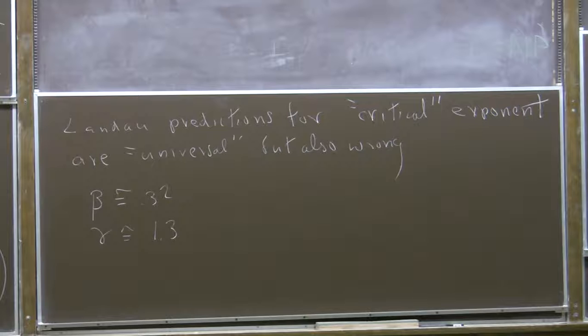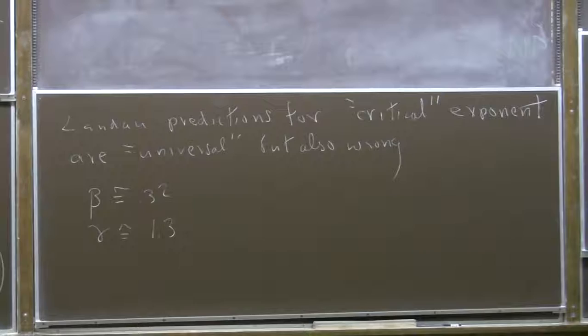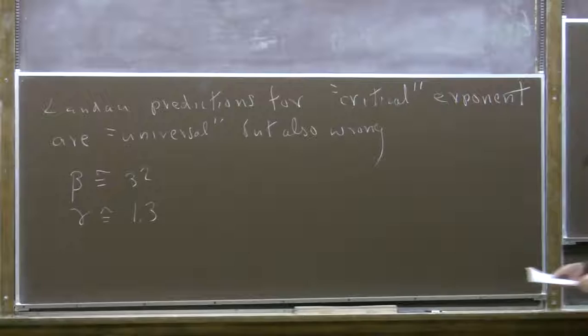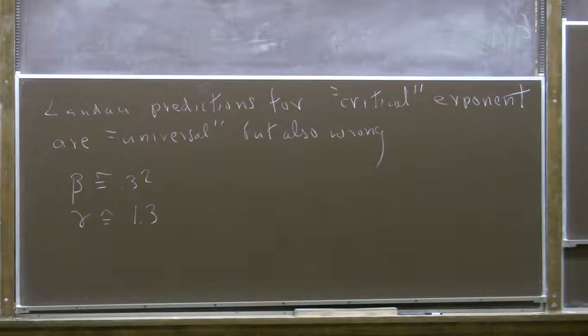What's nice is that the predictions follow from such mild assumptions that we've now learned must be wrong: we can't think of the Helmholtz free energy close to the critical temperature as being a non-singular function — it actually has singular behavior. To make correct predictions, we have to understand that singular behavior better. So what is it that goes wrong? Why is Landau theory wrong?